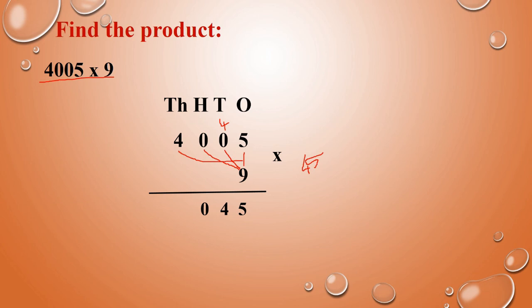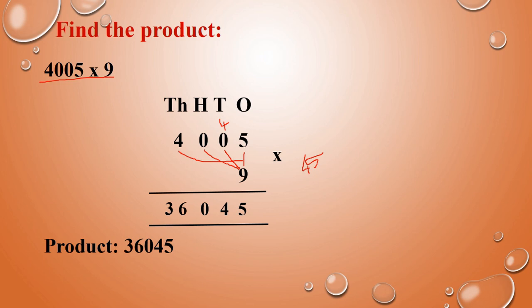Next: 4 into 9 — 4 nines, that is 36. So finally, you have to take the answer. Product is 36,045.